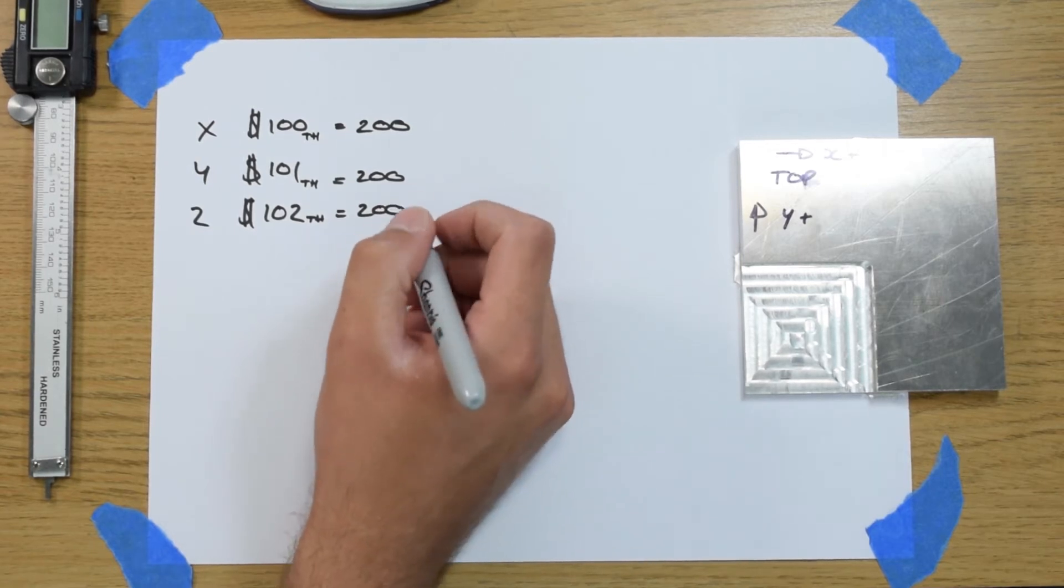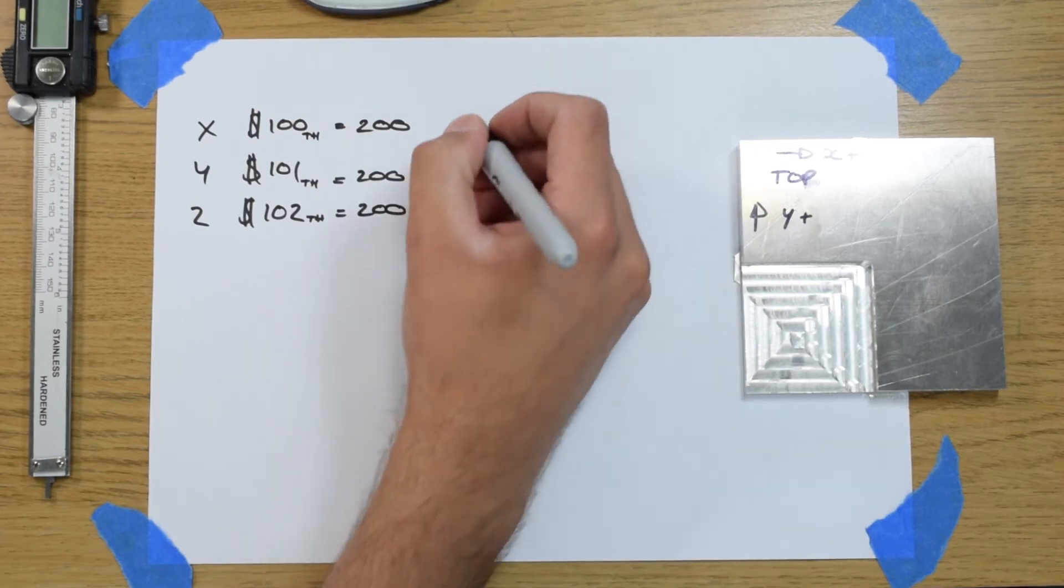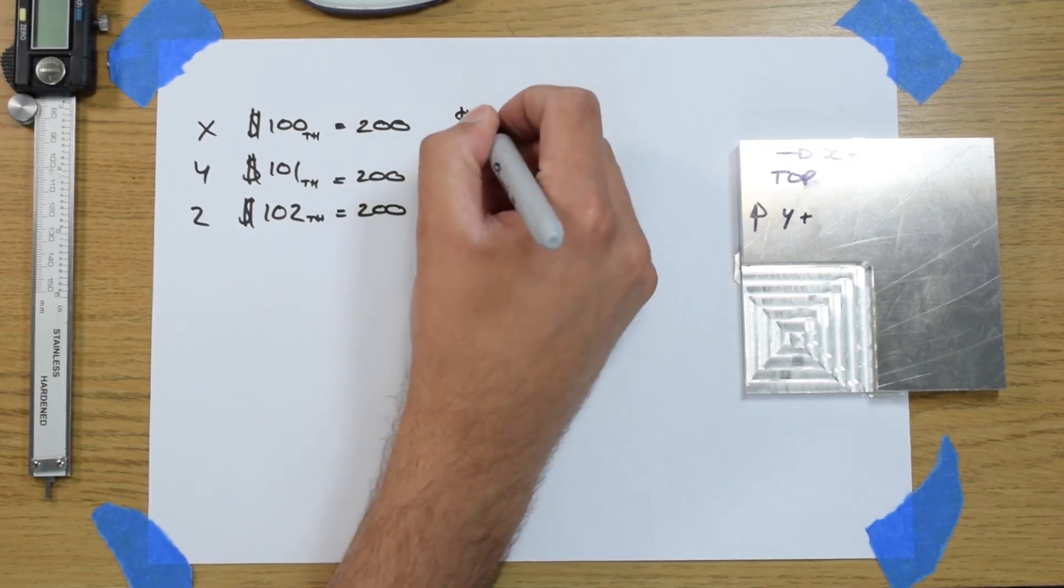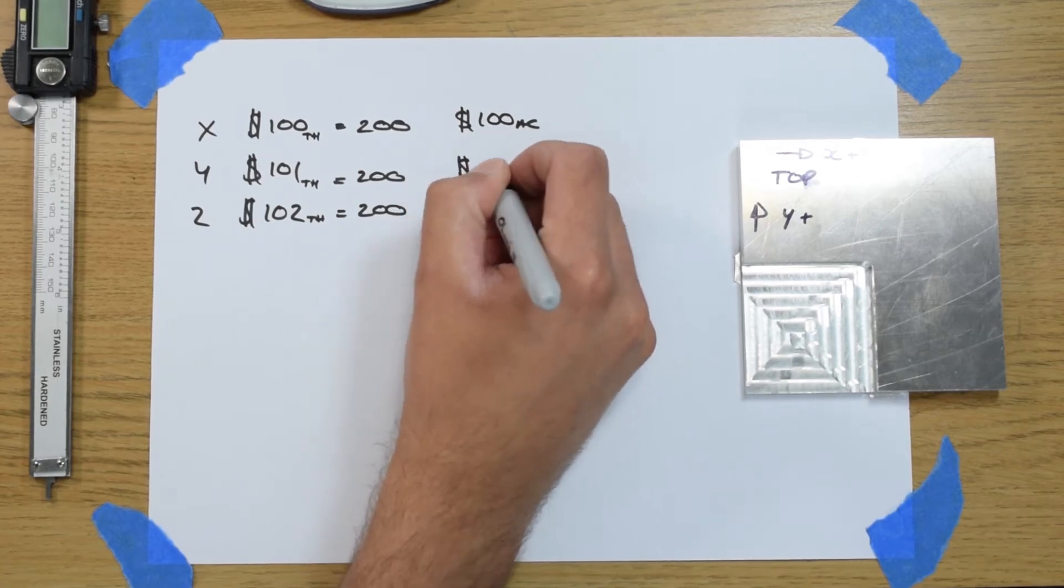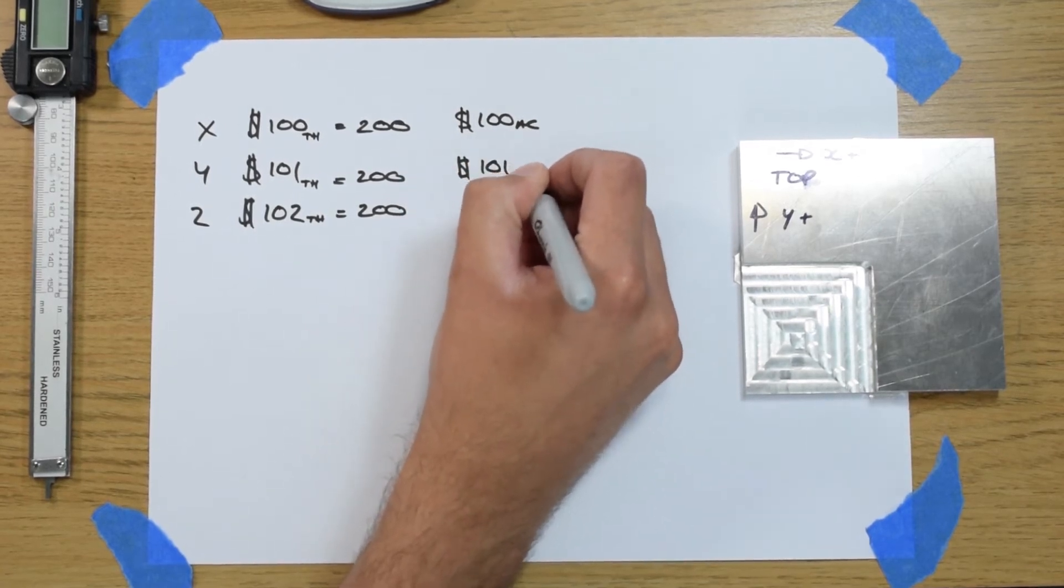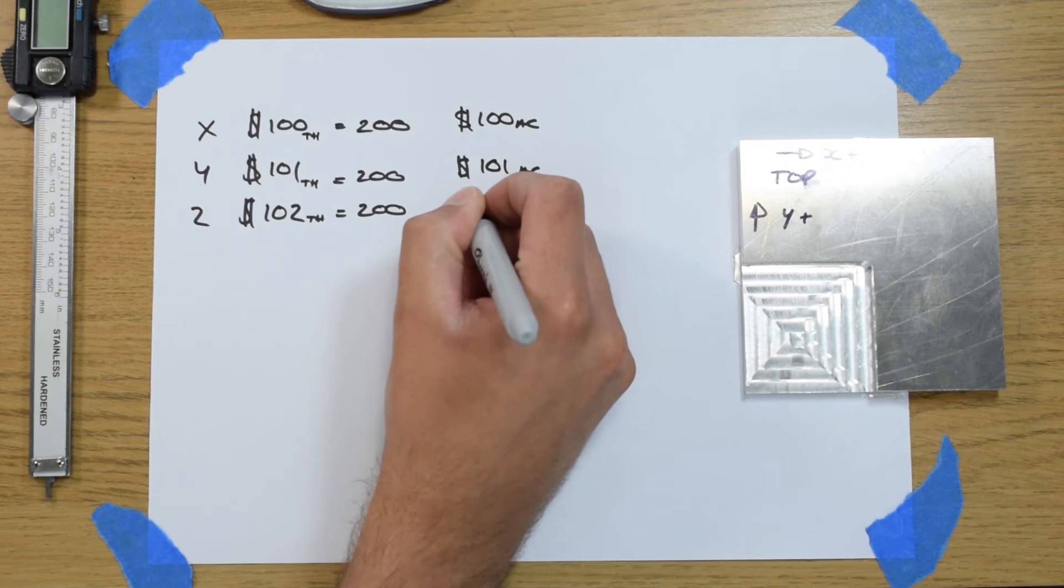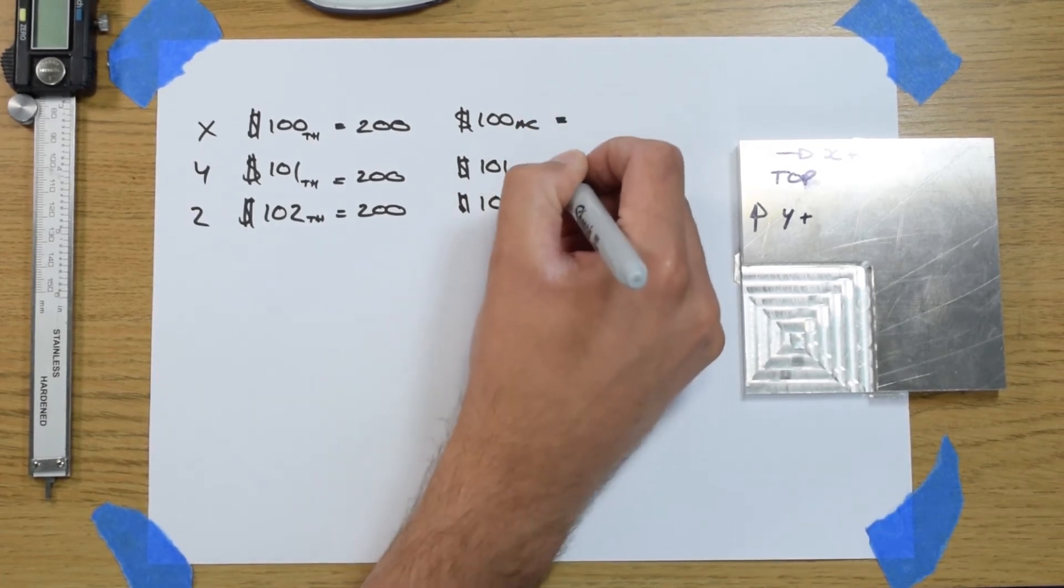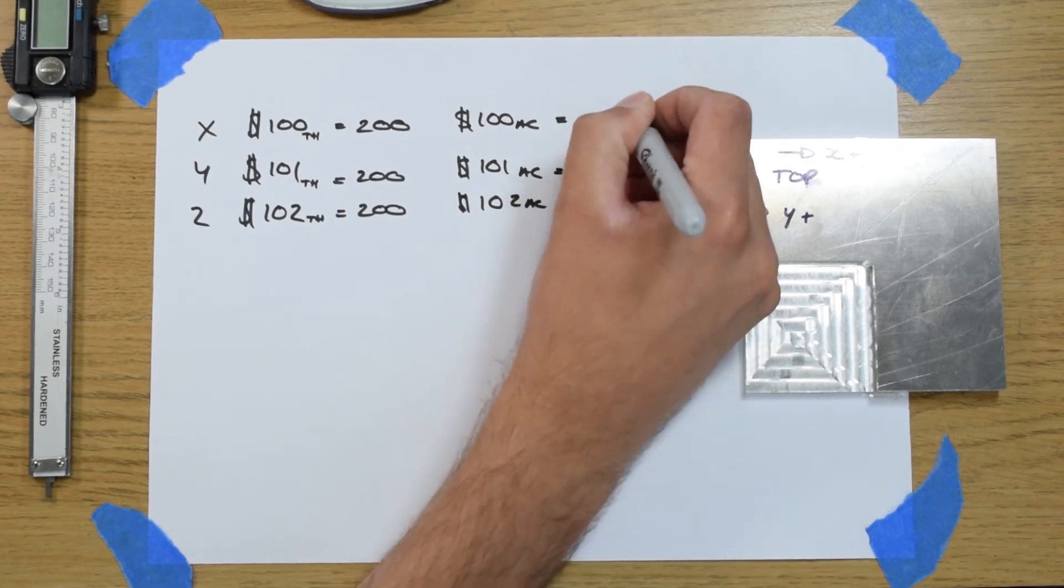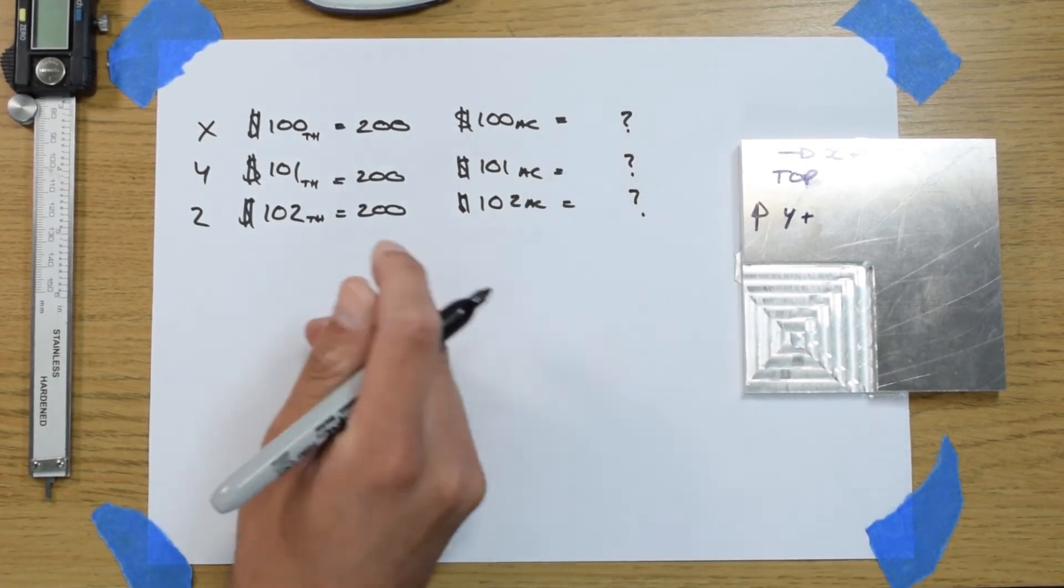What we're trying to work out is the actual values based on our cut here. So this is $100 actual we're going to label it, $101 actual, $102 actual. And we'll leave these question marked. These are what we're trying to find.